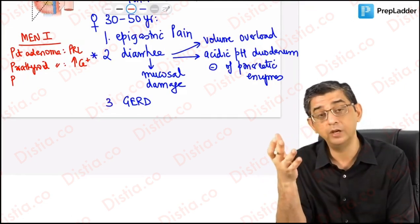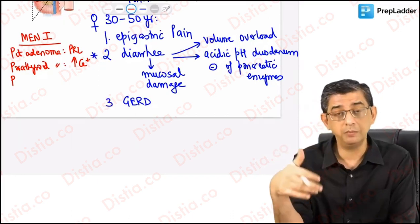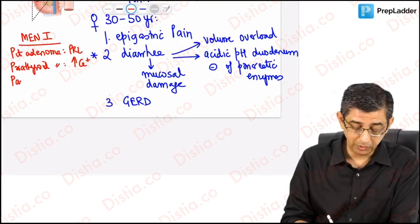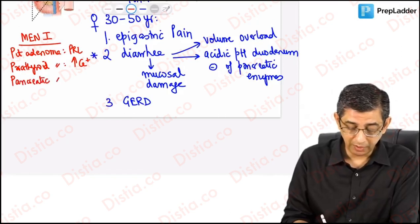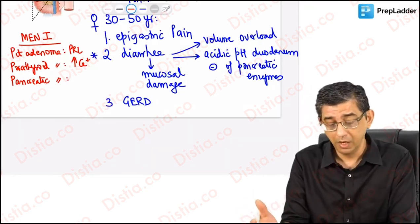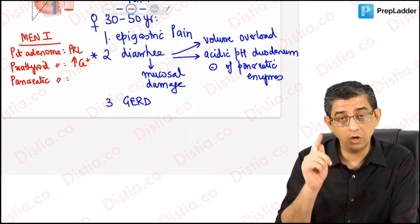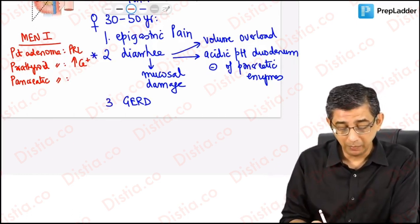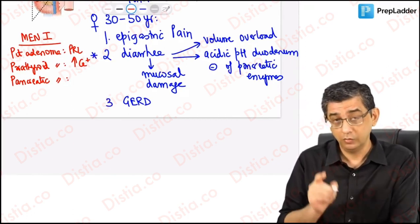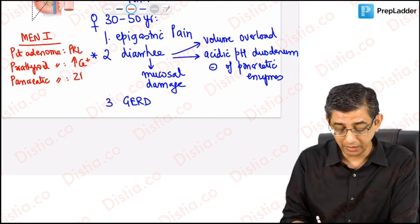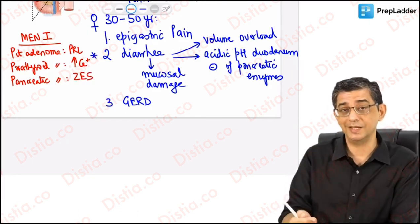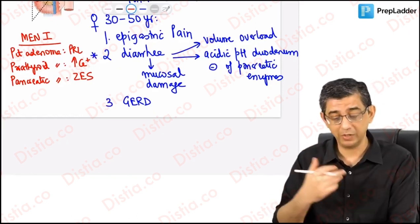This is very interesting: the parathyroid adenoma will contribute to hypercalcemia, and hypercalcemia is like adding fuel to the fire because calcium causes more acid secretion. If hypercalcemia or parathyroid adenoma is co-existing with Zollinger-Ellison syndrome, the condition will worsen. You will have to operate and remove the parathyroid adenoma also. The third P is a pancreatic adenoma.